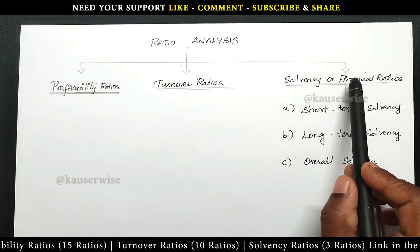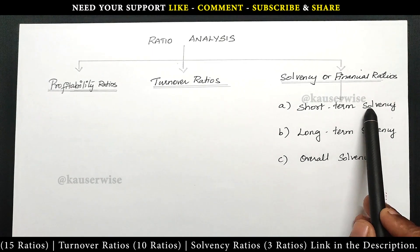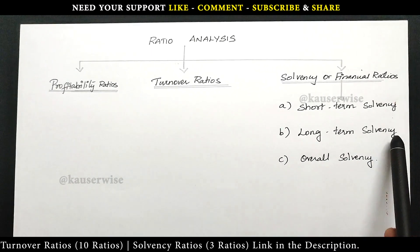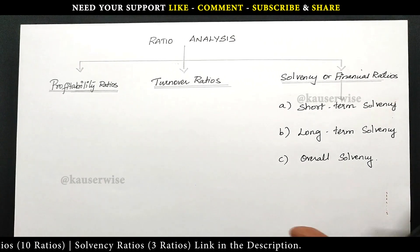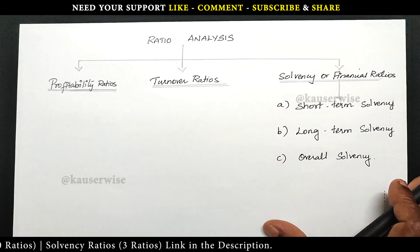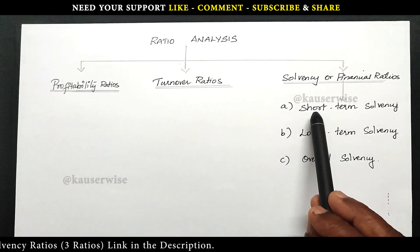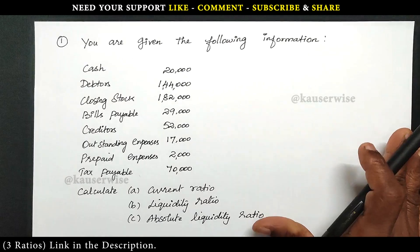Solvency ratios are classified as short term solvency, long term solvency and overall solvency. Now we are going to see the numerical problem for the first one, that is short term solvency.